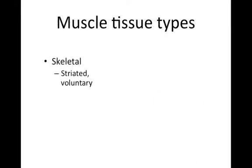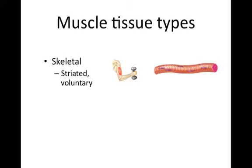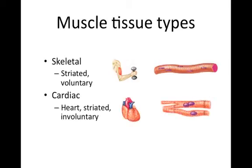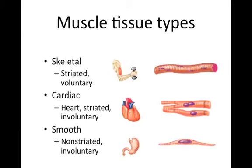The three muscle types are important to remember. Skeletal muscle is striated and voluntary, meaning you have conscious control over it. Cardiac muscle is found only in the heart — it is also striated, but it's involuntary, meaning you don't have conscious control over it, and it has a somewhat different morphological structure. Finally, smooth muscle is found in digestive organs; it's non-striated and also involuntary.